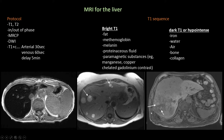As we can see this axial T1 image of a patient with large HCC, we can see it contains hyper-intense foci that represent hemorrhage. This is another T1 image in a patient with melanoma, and we can see multiple T1 hyper-intense foci in the liver that represent melanocytic melanoma metastasis.